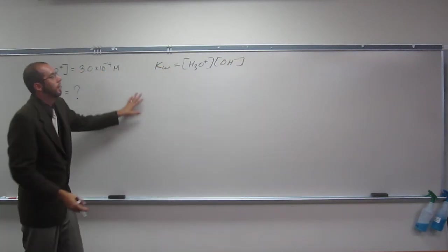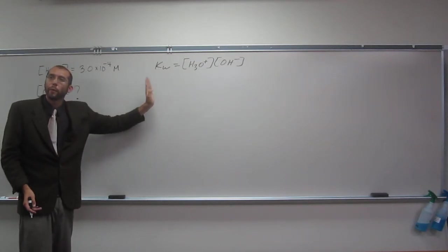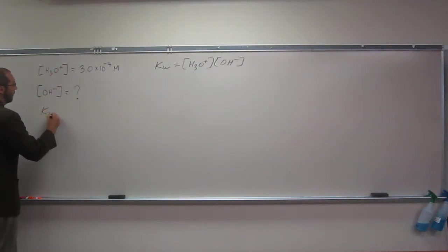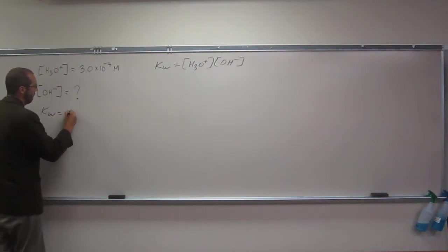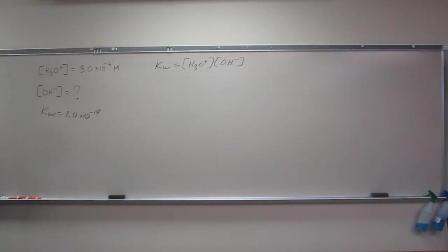Okay. So in order to do this, we have to rearrange this equation, and you have to remember what KW is. So let's write KW over here, 1.0 times 10 to the negative 14th. No units.